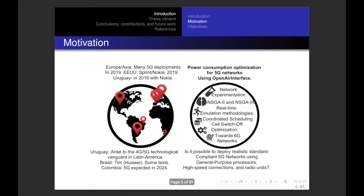And the answer is yes, we can do it using the platform called OpenAirInterface. This is an open source platform, so you can extend technologies directly into that code. For example, you can use evolutionary algorithms to optimize the power consumption operation and also the intercell interference. You can also extend technologies such as carrier aggregation and coordinated scheduling. This kind of optimization shows a picture for the next step, that is the sixth generation of cellular networks.